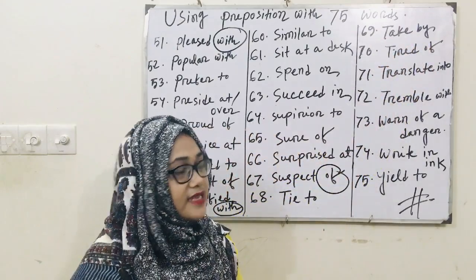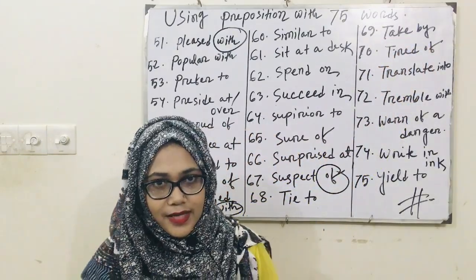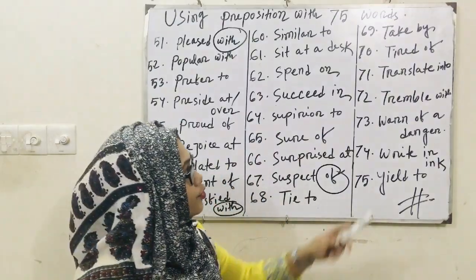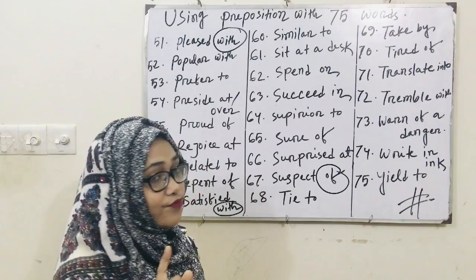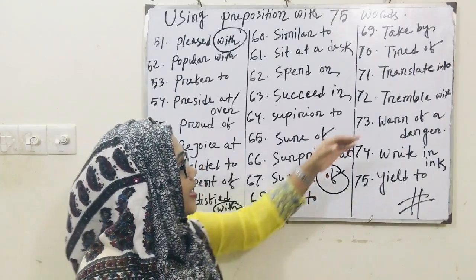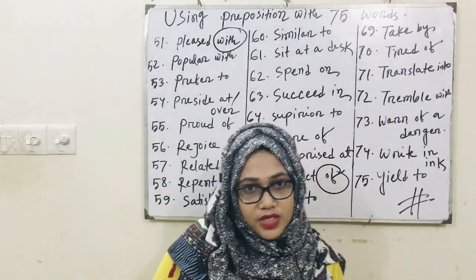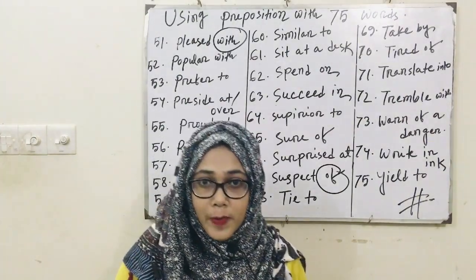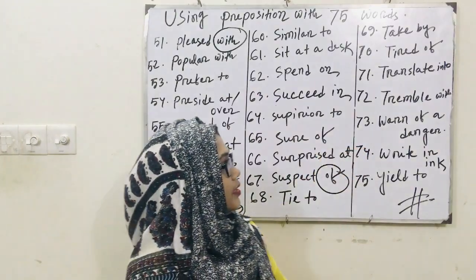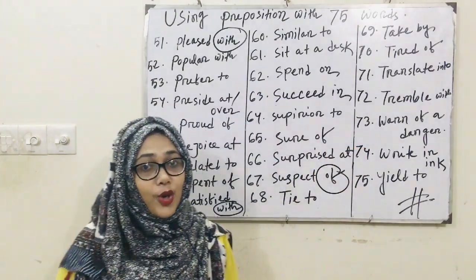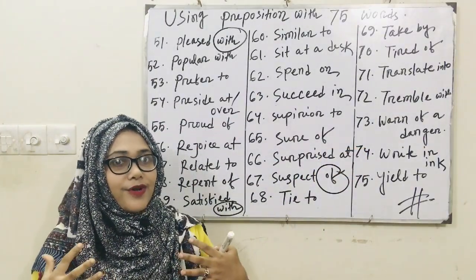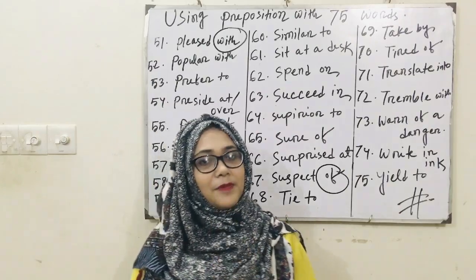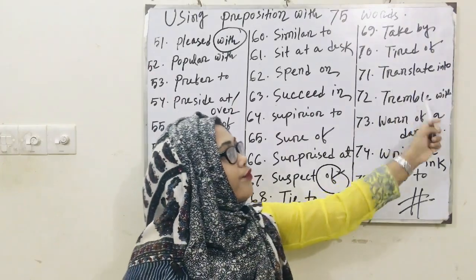By. Word number 70 — 'tired.' You should use the preposition 'into.' Word 71 — 'tremble.' This word means to be frightened or to shake. 'Tremble' — the preposition to use with it is 'with.'